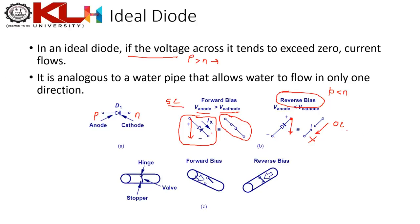Water-pipe analogy: think of a pipe with a hinged valve. When tilted in the forward direction, gravity opens the valve and water flows. In reverse, the stopper prevents the valve from opening, so there is no flow — just like a reverse-biased diode.